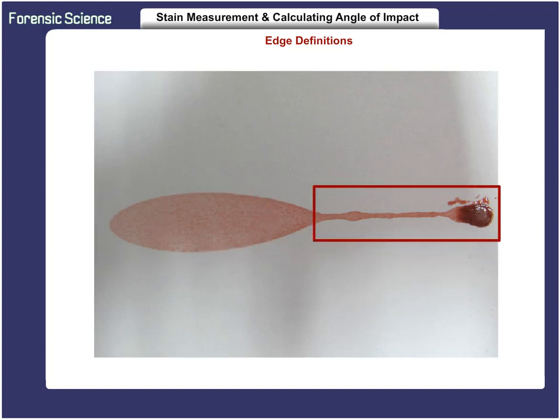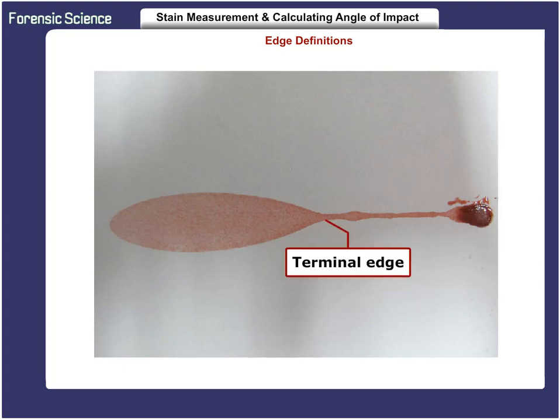If the volume of the drop of blood is great enough, the blood that has not been stabilized by deposition on the surface will continue along the path of travel, creating even more deformation from the ideal elliptical stain. All of this distortion is the result of causes other than the angle of impact. For that reason, any deformation at the terminal edge of a stain must be negated when the length of the stain is measured for impact angle determination.